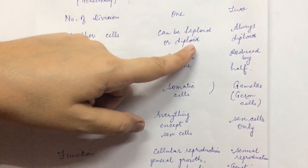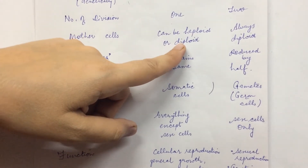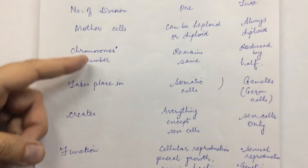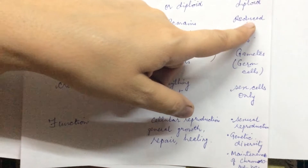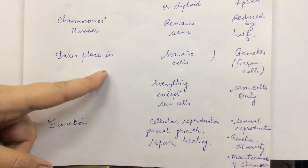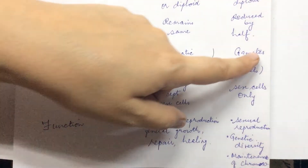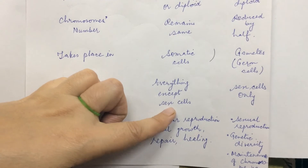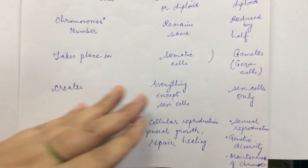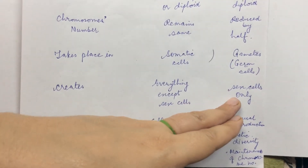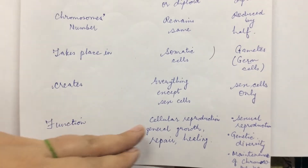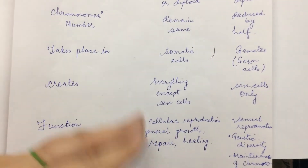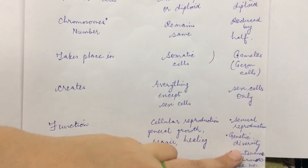Regarding mother cells: in mitosis they can be haploid or diploid; in unicellular organisms it can be haploid, in multicellular organisms it is diploid. In meiosis, the mother cell always has the diploid number. Chromosome number remains the same in mitosis but is reduced by half in meiosis. Mitosis takes place in somatic cells whereas meiosis takes place in gametes or germ cells. Mitosis creates all cells except sex cells. The function of mitosis is general growth, repair, and healing of body parts.